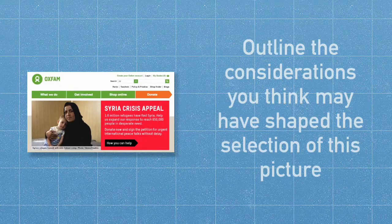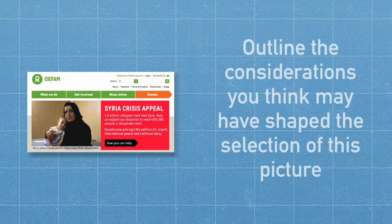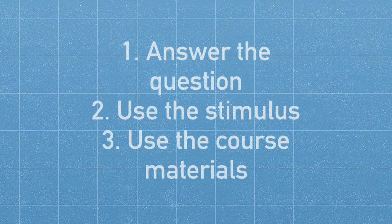For example, the Oxfam campaign advert shows a young child and his mother. Their surroundings are bare and they hold very tight to each other as they look directly at the viewer. One of the considerations which shaped the selection of this picture seems to be an attempt to win the viewer's sympathy and desire to help. This relates to Higginet's ideas about the commodification of innocence. When every paragraph of your answer contains all these three elements, you will get a good mark for your E212 Part A.